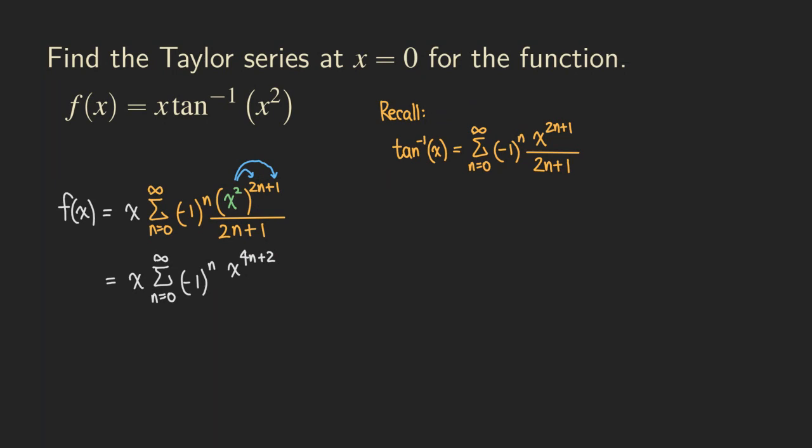And then in the numerator, we do not change anything. We are still going to get the same thing right here. So now we can distribute the x to all the terms in the series. Then we are going to get x, and if you're having x to the first power multiplied to the x to the 4n plus 2, then we are going to get 4n plus 3. Then in the denominator, we have 2n plus 1. So this is the answer.